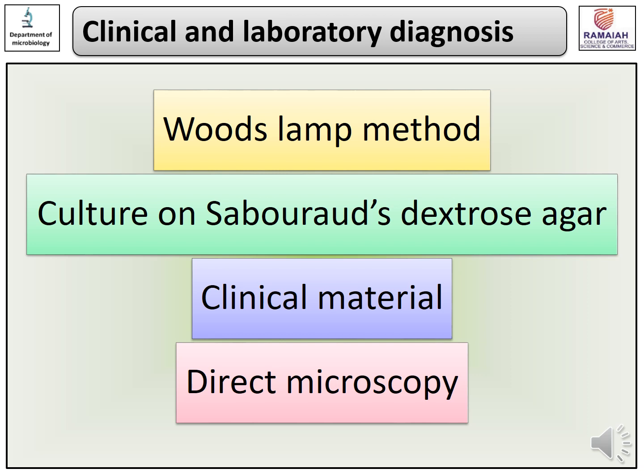Generally, specimens are prepared as a wet mount containing 10–20% aqueous potassium hydroxide solution. The use of potassium hydroxide helps dissolve the keratin present in nails or skin and allows visualization of the hyphae and fungal spores.